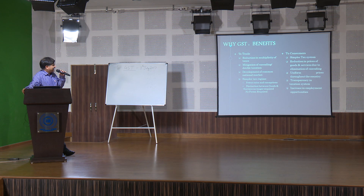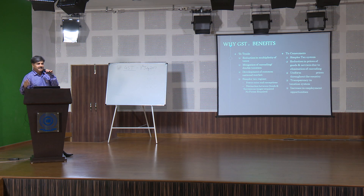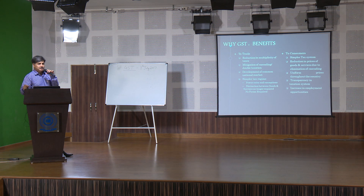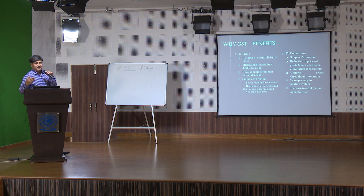Cascading is when taxes are levied on taxes. For example, if we go to buy a TV, the TV shop owner has paid excise duty on that TV, and when he sells it to us he charges VAT on the full price including excise. So we pay excise duty also embedded in the VAT because no input credit is allowed for excise duty — that is cascading of taxes. In other transactions also there is a lot of cascading.